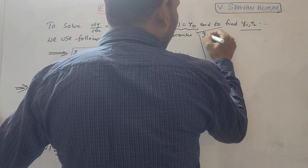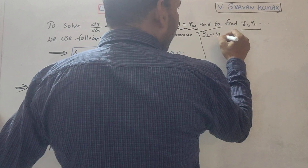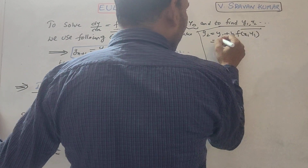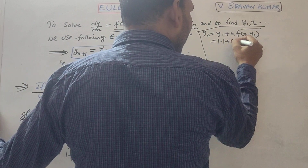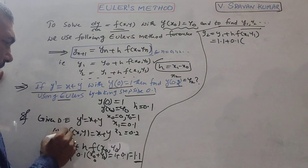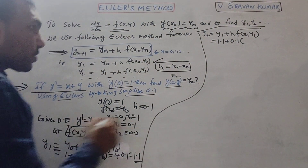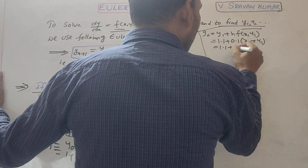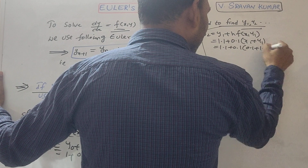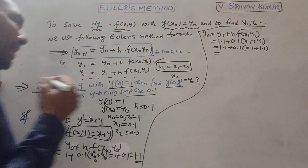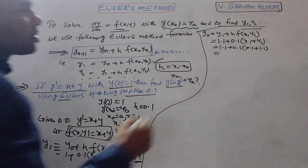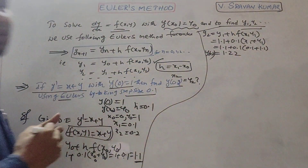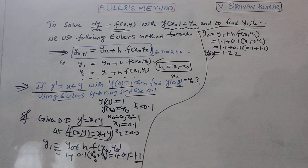Now we find y₂: y₂ = y₁ + h · f(x₁, y₁). We know y₁ = 1.1, h = 0.1, and f(x, y) = x + y, so f(x₁, y₁) = x₁ + y₁ = 0.1 + 1.1. Using a calculator, you get y₂ = y(0.2) ≈ 1.22.